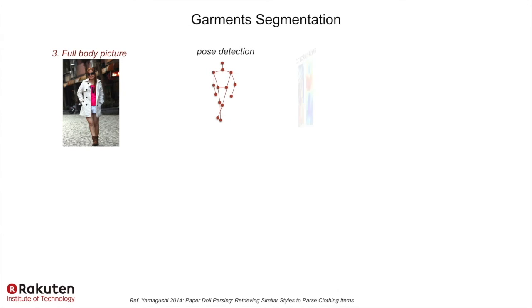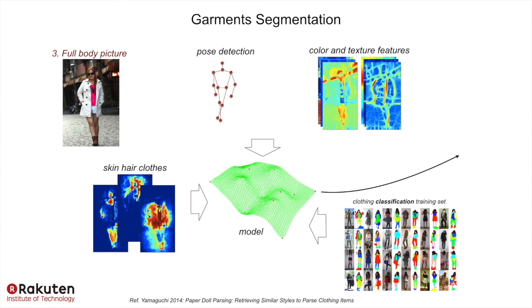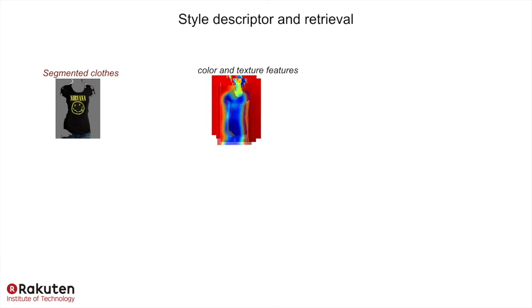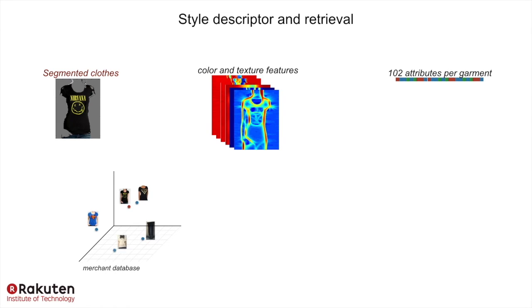Clothing segmentation is performed by analyzing color and texture characteristics of the picture. Every segmented garment is represented by its style descriptor, a set of features capturing its style in terms of color and decoration patterns. In a space of style descriptors populated by products from a merchant website, the closest picture to our photo is the most similar to our search.